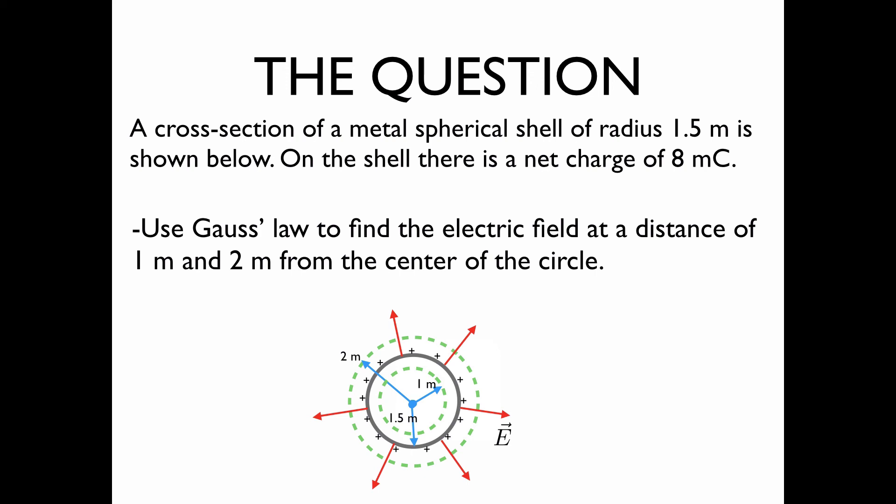And the outer green circle is to show the sphere of radius 2 meters at which we'd like to find the electric field. The blue arrows simply point to the radii of the various spheres, and the red arrows are there to illustrate the electric field which is pointing radially outward from the spherical shell of charge.